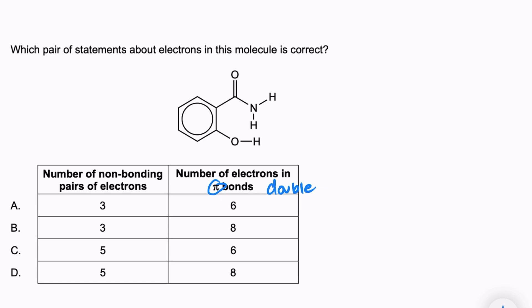Any double bond is going to be a pi bond. So we have a pi bond here and here, so that gives us two. If you notice our options for pi bonds are six and eight, so you might be thinking where do those other pi bonds come from? Don't forget the ring that we have here.